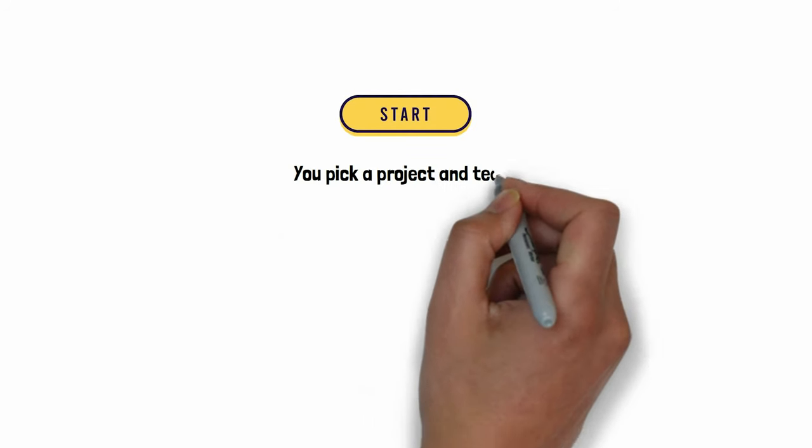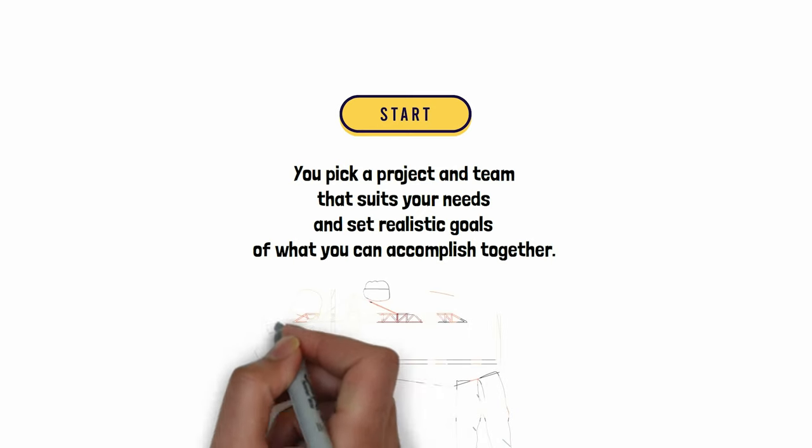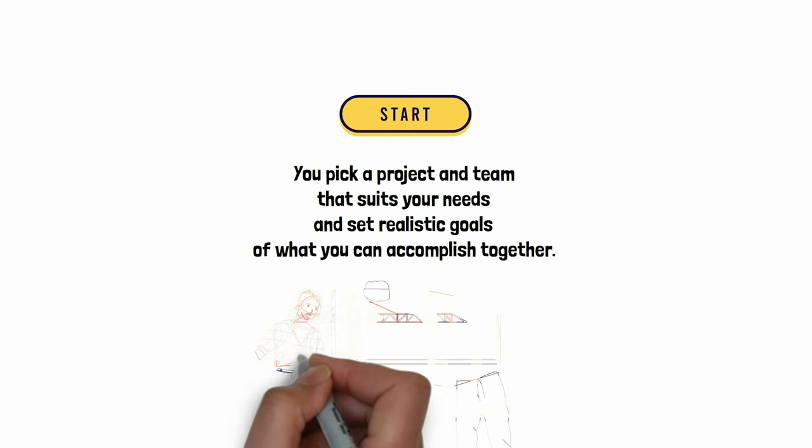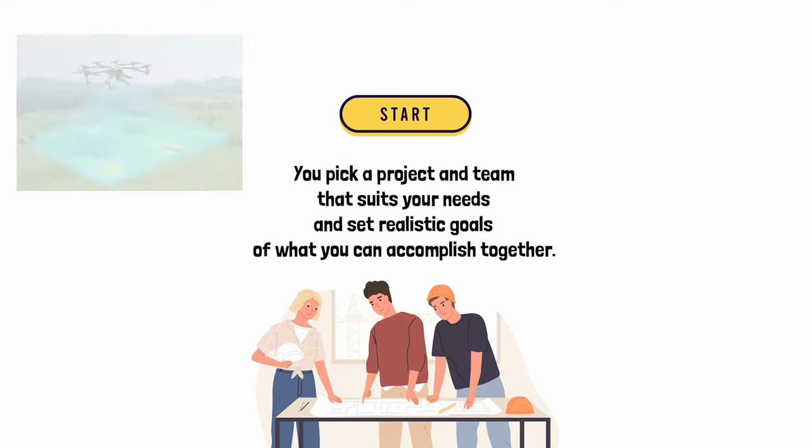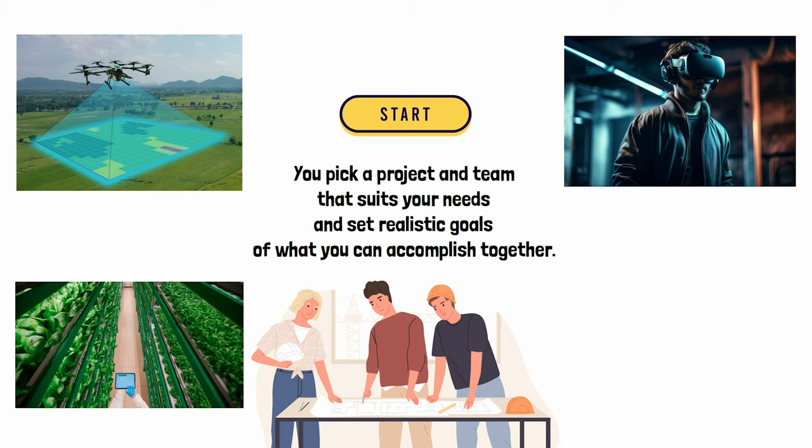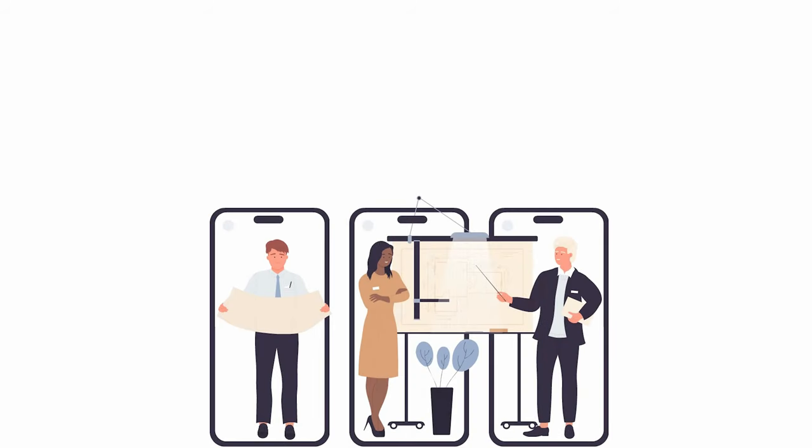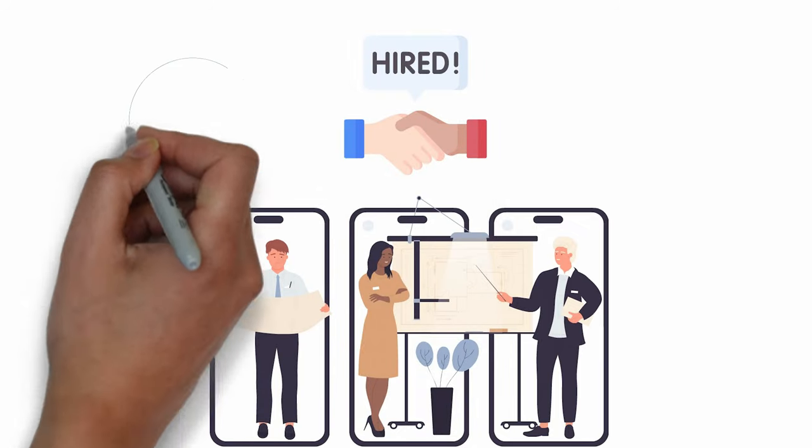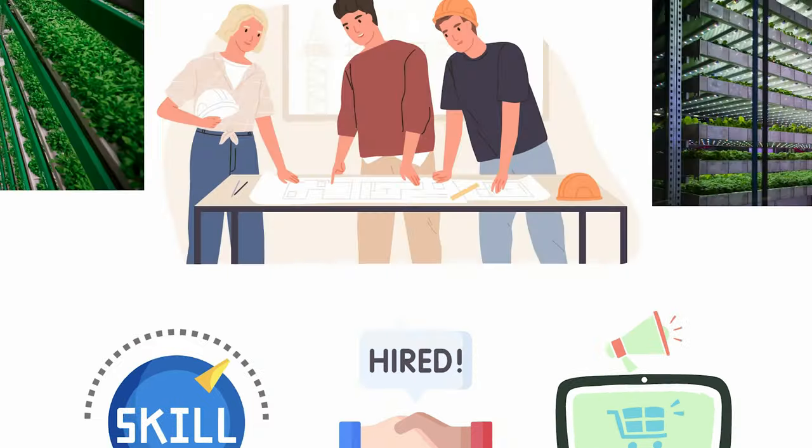To start, you pick a project and team that suits your needs and set realistic goals of what you can accomplish together. What's really cool here is that your team can be made up of all types of other engineers so you can each specialize in an area to make more well-rounded projects like drones with computer vision, next-gen gaming peripherals, or kickstart the future of automated vertical farms. We have also seen students reach out to local companies to see if they can work on a project for them, which usually leads to internships or job offers later down the line. Anything is game here, as long as you're using the skills you've gained in your degree and can convince your professors that there is a market for your project.